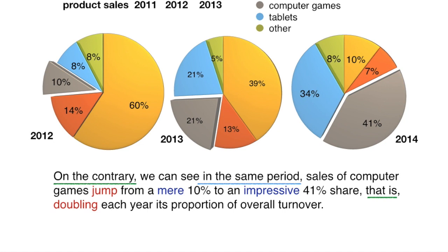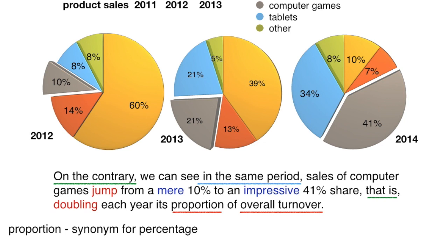These are two of many verbs we can use to describe an increasing trend. I've underlined another linking device: 'that is.' This is a great way of illustrating or adding information to something said in the previous part of a sentence. And the final point: I've changed the vocabulary, using 'proportion' as a synonym for percentage, and the expression 'overall turnover' to mean total sales.